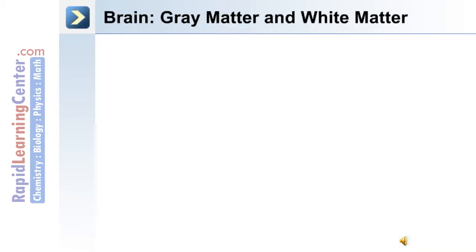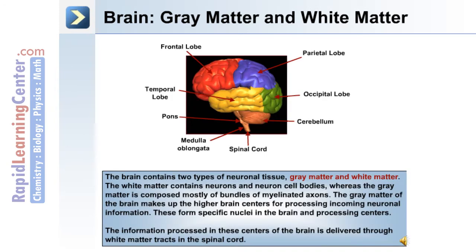The brain contains gray matter and white matter. The white matter contains neurons and neuron cell bodies, whereas the gray matter is composed mostly of bundles of myelinated axons. The gray matter of the brain makes up the higher brain centers for processing incoming neuronal information, forming specific nuclei and processing centers. The information processed in these centers is delivered through the white matter tracts in the spinal cord.